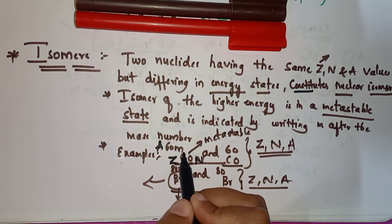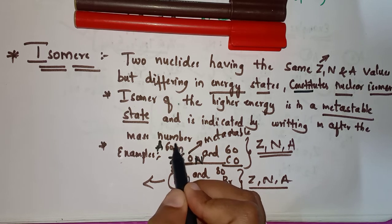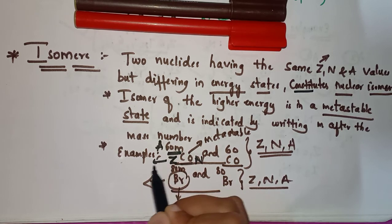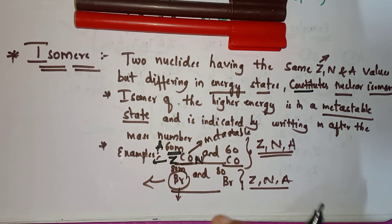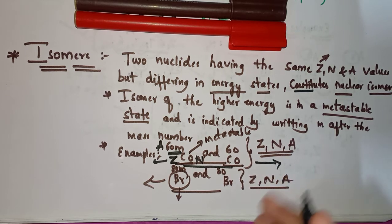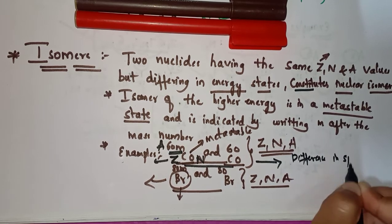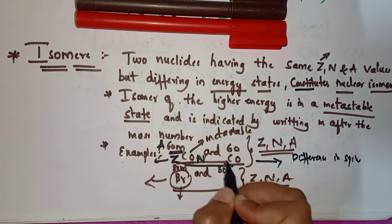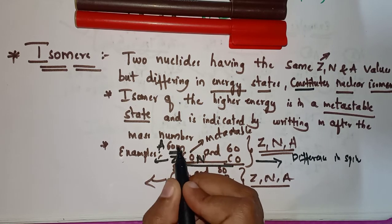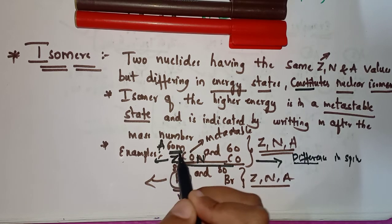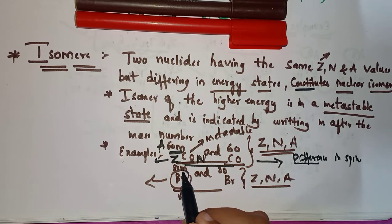We represent the metastable state by writing 'm' after the atomic mass number. So this cobalt-58m is in the metastable state, meaning it has higher energy. The difference between these two cobalt nuclides is also a large difference in their spins. The one with higher energy has a higher spin, and the metastable isomer is radioactive.